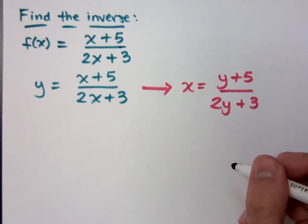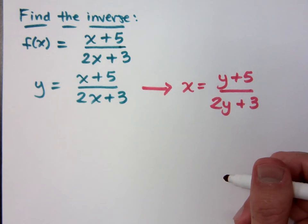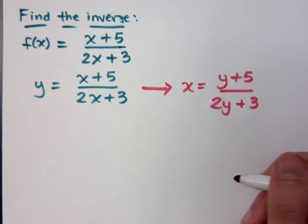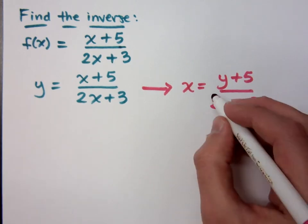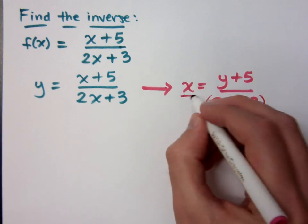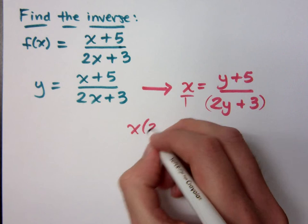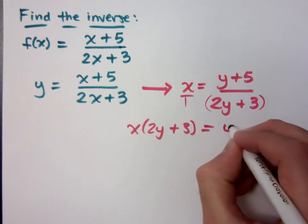Then we want to clear those fractions. If I don't change the x's to y's now, I might forget later and end up right back here — I see it happen all the time. If I take this 2y plus 3 and multiply it to both sides, I get x times 2y plus 3 equals y plus 5.